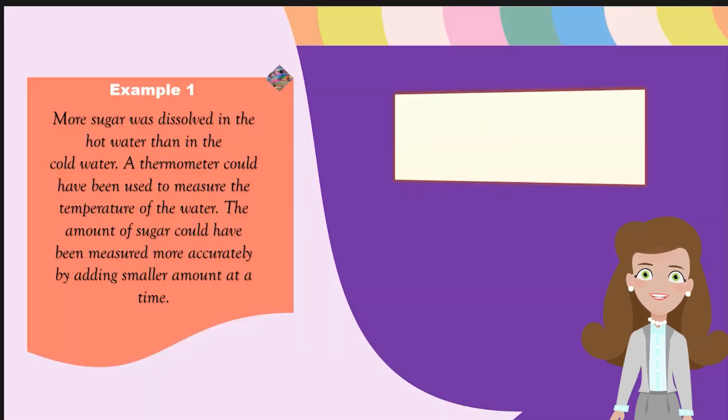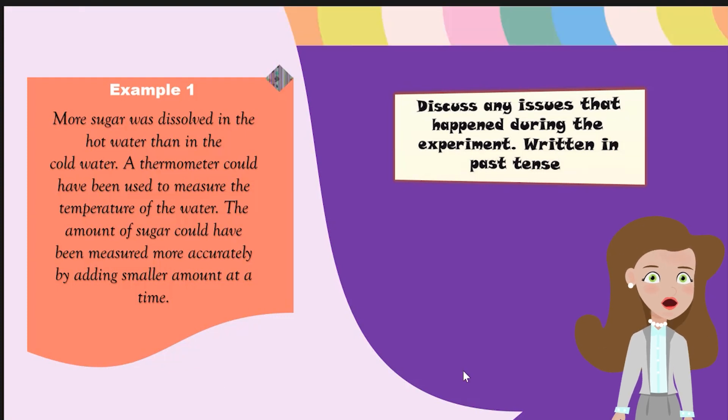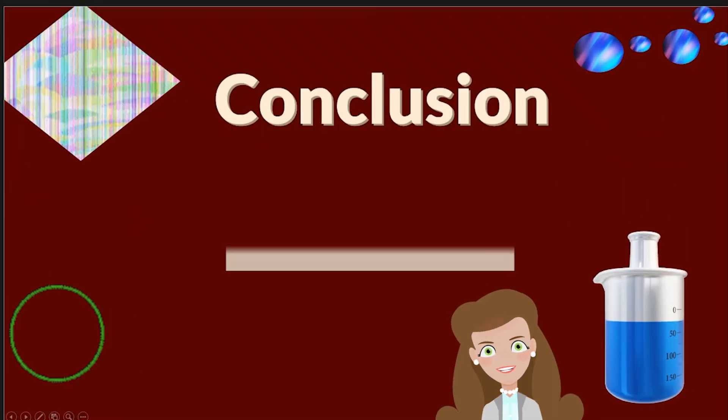Discussion, which is what do the results mean? This section discusses any issues that happened during the experiment and it is written in the past tense. Let's look at this example. More sugar was dissolved in hot water than in cold water. A thermometer could have been used to measure the temperature of the water. So here they are discussing what they could have done. The amount of sugar could have been measured more accurately by adding smaller amounts at a time. So they're discussing any issues they have and you can also discuss what are some future things that you can do to make this experiment more successful.